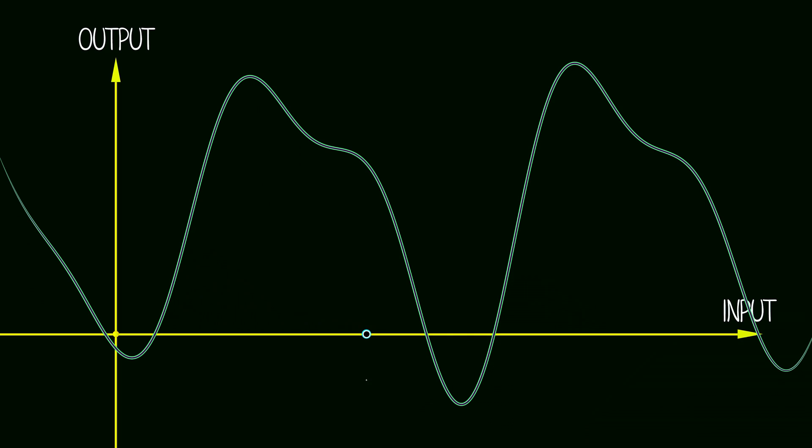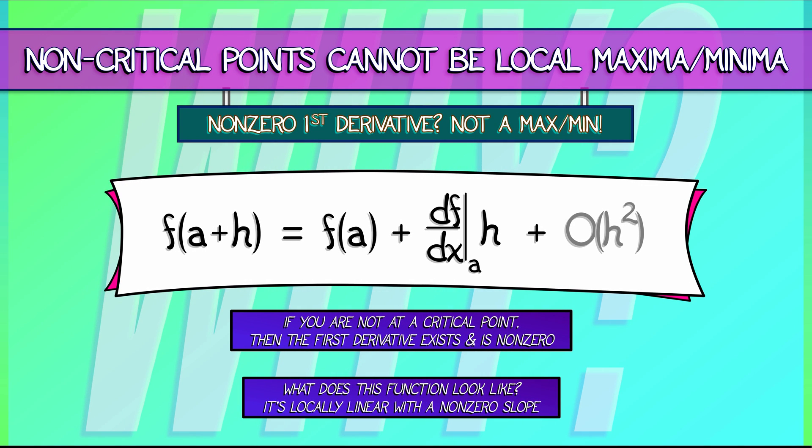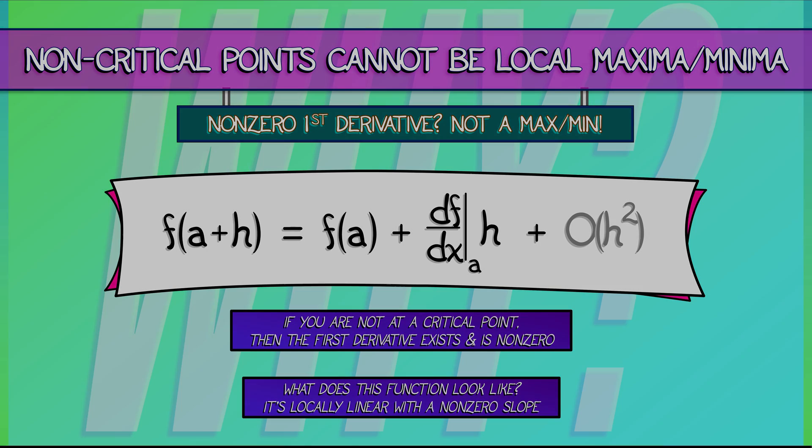Now of course, you can see this in terms of thinking of the slope of that tangent line, in thinking in terms of rates of change, lots of different ways to look at this. But I want you to make sure that you understand this result from the perspective of Taylor expansion, linearization. That is going to be what drives our further exploration of max-min problems. We'll talk to you next time.